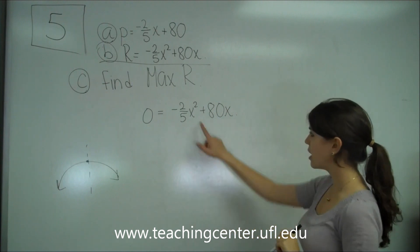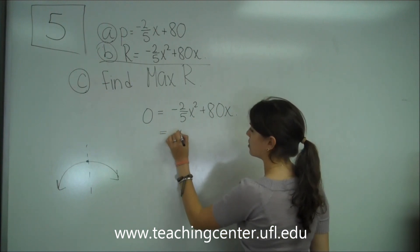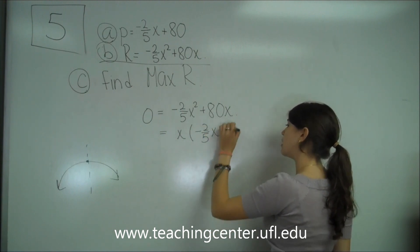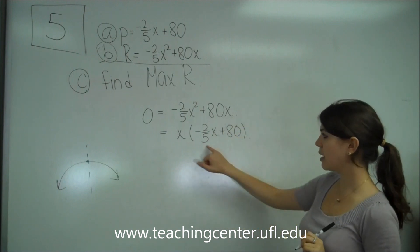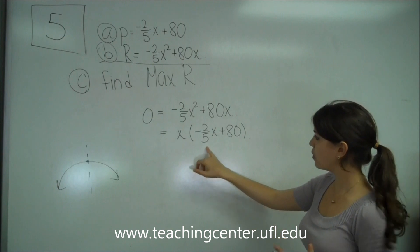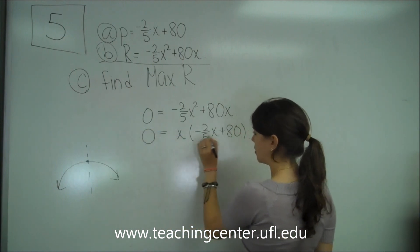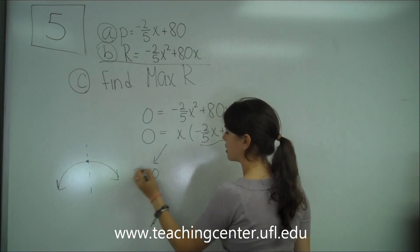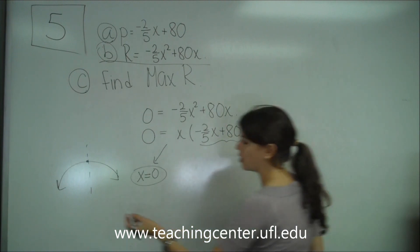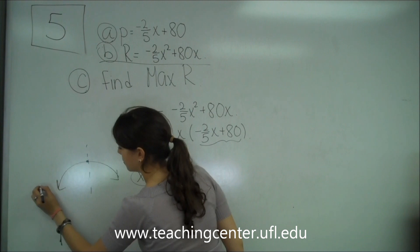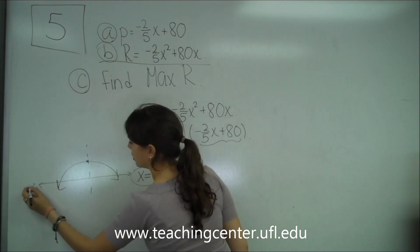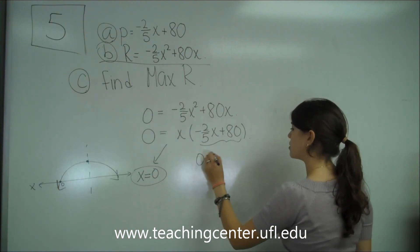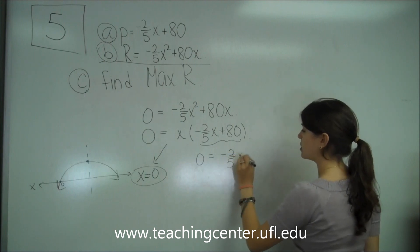And so I get 0 equals negative 2 fifths x squared plus 80x. So to factor, I'm going to just take out an x for now. So I get x times negative 2 fifths x plus 80. So I'm just going to equal my x to 0, and then this guy to 0. So the first one, I know my x-intercepts, one of them is going to be 0. So let's call this the x, and so let's say this one is 0.